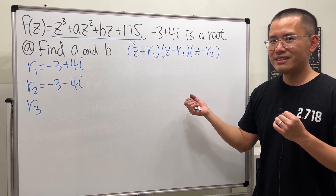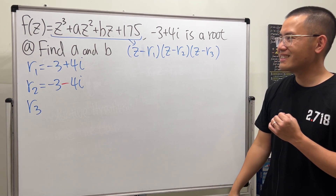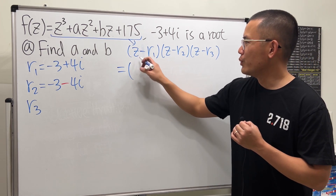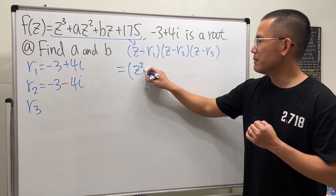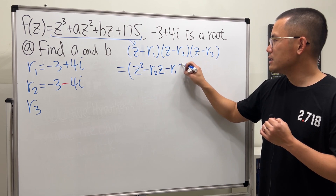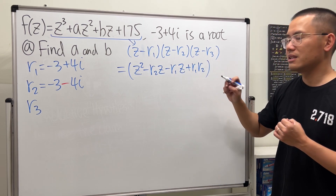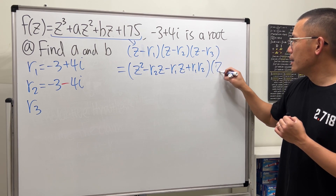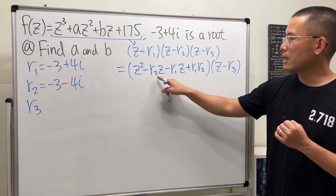Let's multiply things out and match coefficients. Doing the first two factors: z times z gives z squared, this times that gives minus r2·z, this times that gives minus r1·z, and finally r1·r2 positive. Then we need to multiply by (z minus r3), combining like terms to get negative r1 minus r2 for the z coefficient.